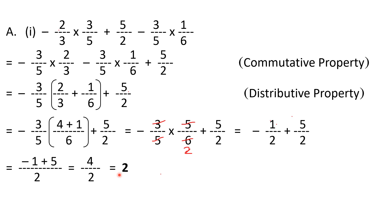My suggestion: try doing this calculation on your own without using properties first, then redo it using the commutative and distributive property. You will see for yourself that it saves a lot of time and effort in arriving at the result. Now let's see part number two.